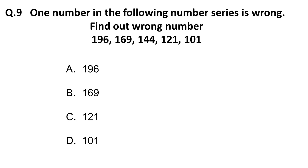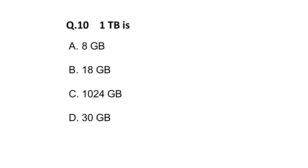The next question is: one number in the following number series is wrong — find it. If you know the squares of numbers, you'll see that 196 is the square of 14, 169 is 13², 144 is 12², and 121 is 11². The next should be 100 (10²), but the series shows 101. So the correct answer is 101 — it is the wrong number.